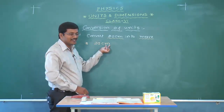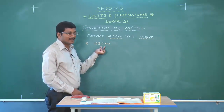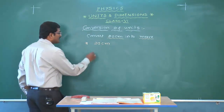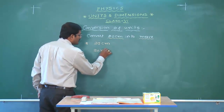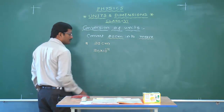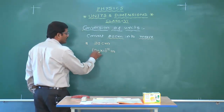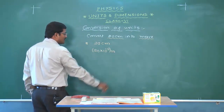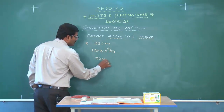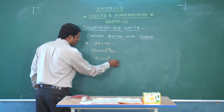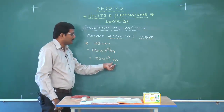So 20 centimeters — there is a prefix C. What is the value of C? From the table, 'centi' means 10 to the power of minus 2. So 20 into 10 to the power of minus 2 equals meters. This is the value of centimeters expressed in meters.